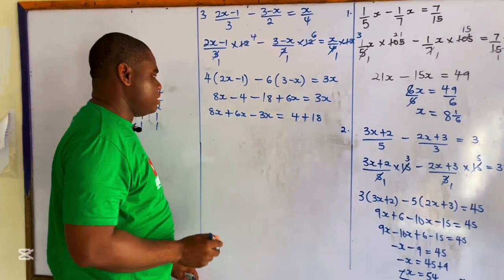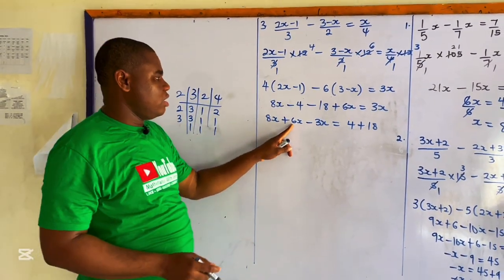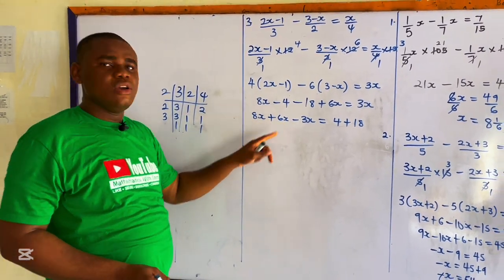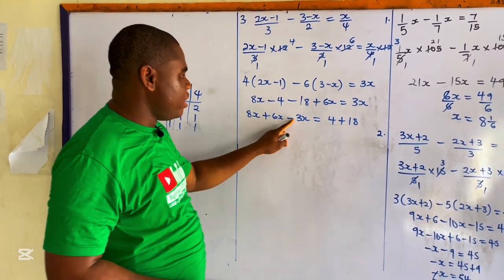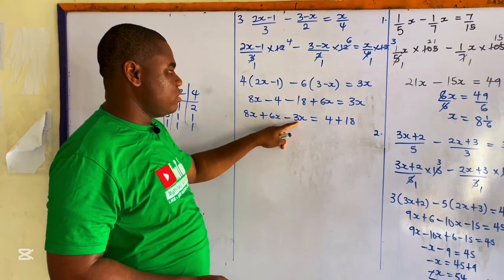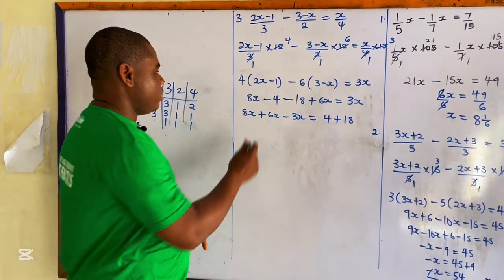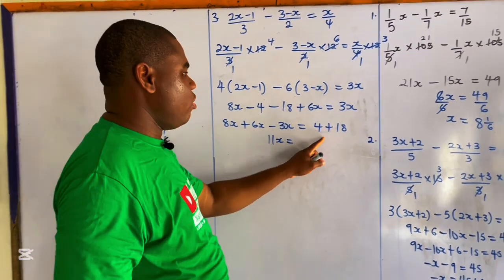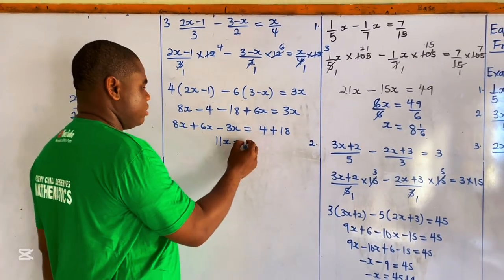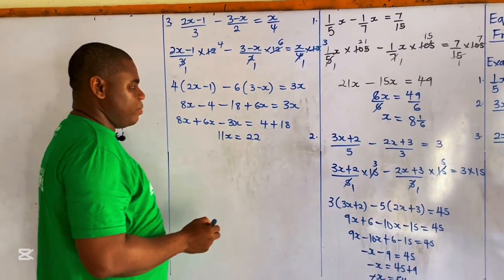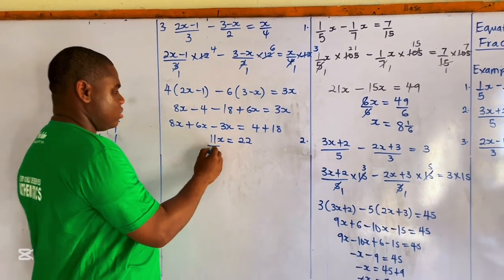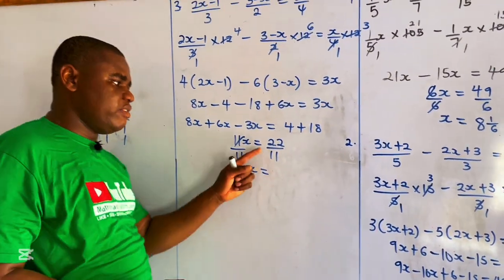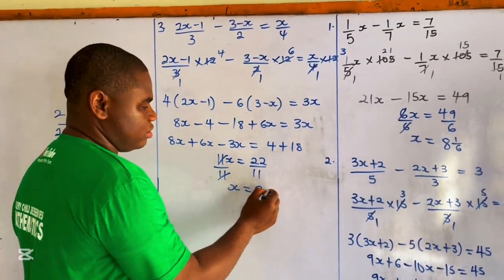Collecting like terms: 8x plus 6x minus 3x gives 11x. And negative 4 minus 18 gives negative 22. So 11x equals 22. Dividing both sides by 11, x equals 22 divided by 11, which is 2.